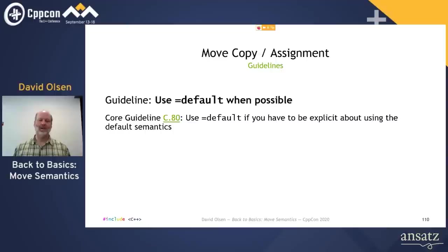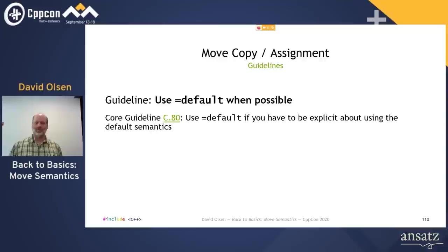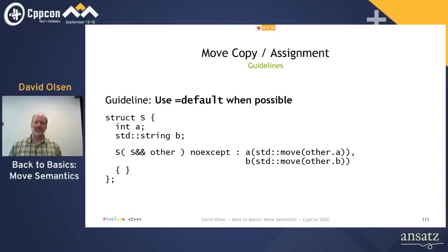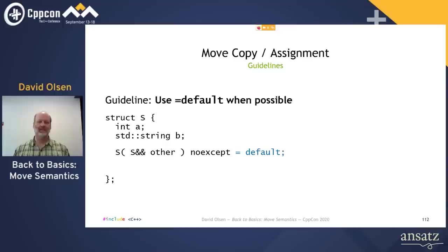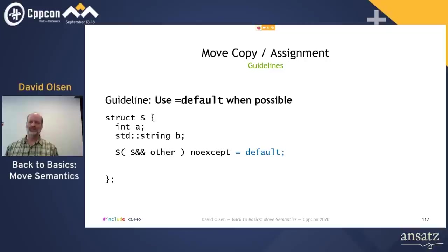The next guideline: use equals-default for your move operations when that will do the right thing. Let the compiler do the work for you, lessening the chance that a typo will introduce a bug. Just be sure to put some thought into whether or not the compiler-generated move operation will do the right thing. Earlier we had an example where the move constructor just calls the move constructors of all sub-objects — using equals-default is not only equivalent, it is better.